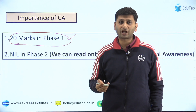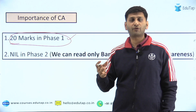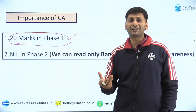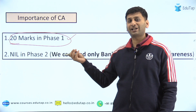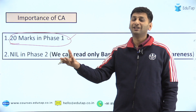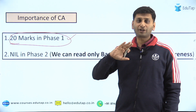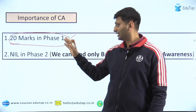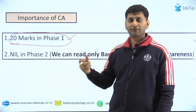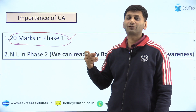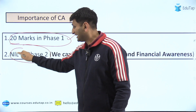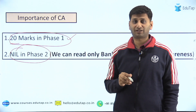Whatever you are able to score in GA is fine. I'm not saying you need to score 12 or 15 here. Phase one is just a qualifying paper — you need to get 30 out of 100. So even if you get 10 to 12 out of 20 in GA, I hope you can score the remaining 18 in other sections. There is not much fuss about these 20 marks because they are not going to decide whether you clear phase one or not. And in phase two, the weightage is just nil — remember that.